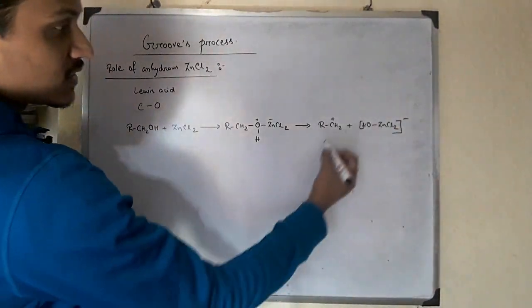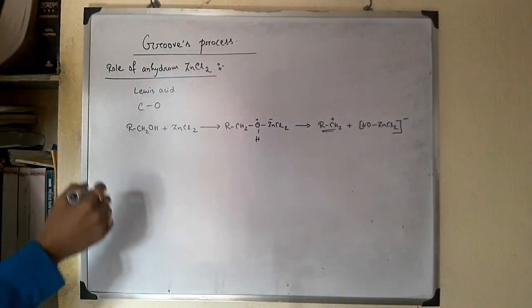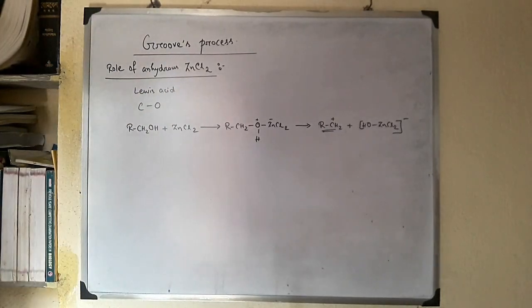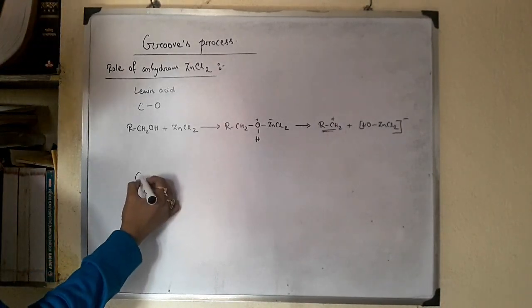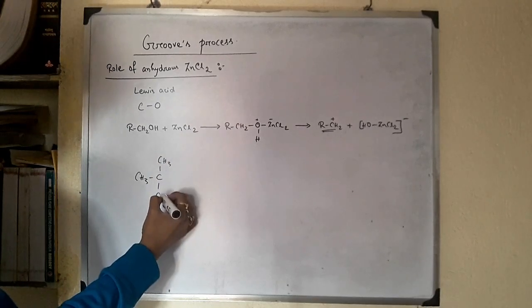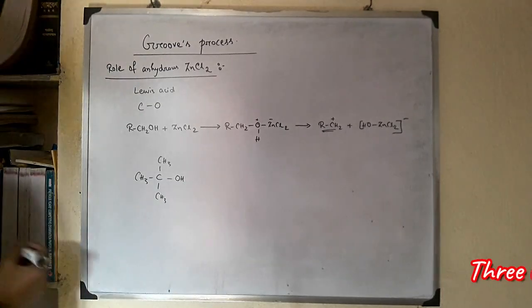This carbocation is then attacked by the nucleophile chloride ion. Why is ZnCl2 not used in case of tertiary alcohols? Tertiary butyl alcohol, which is a tertiary alcohol, is very reactive.